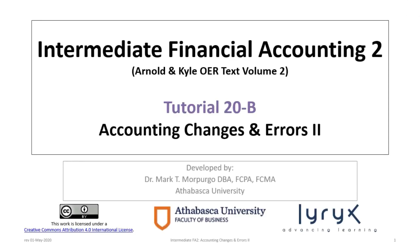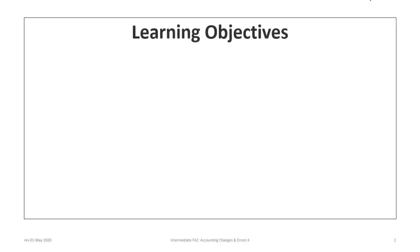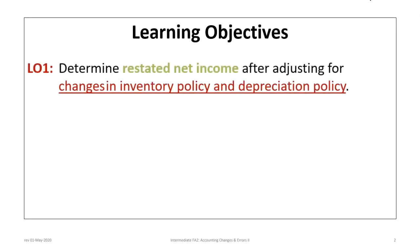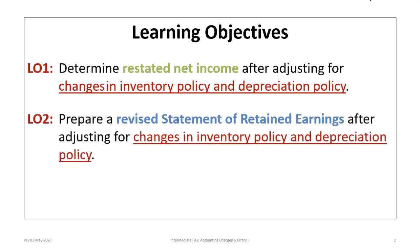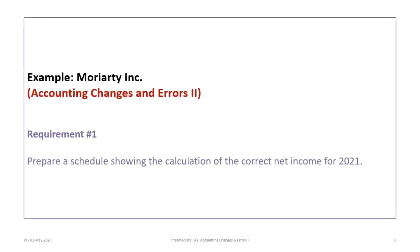Hello and welcome to Intermediate Financial Accounting 2, Tutorial 20B. This is the second tutorial in a series related to accounting changes and errors. This tutorial has two learning objectives: first, to determine restated net income after adjusting for changes in inventory policy and depreciation policy; and second, to prepare a revised statement of retained earnings after adjusting for those changes. This tutorial is based on the Moriarty Inc. example.